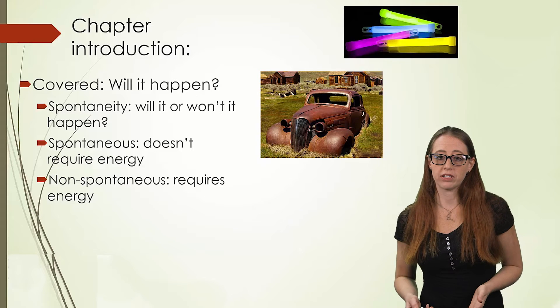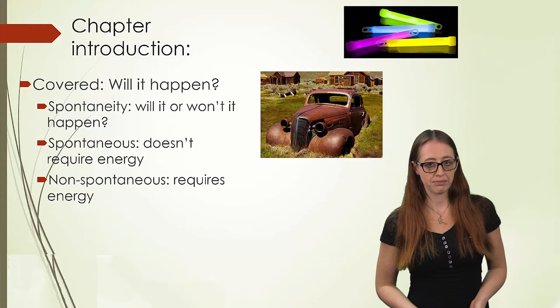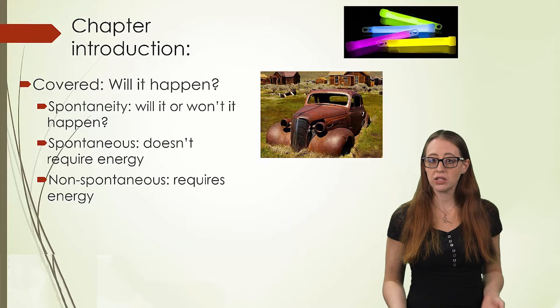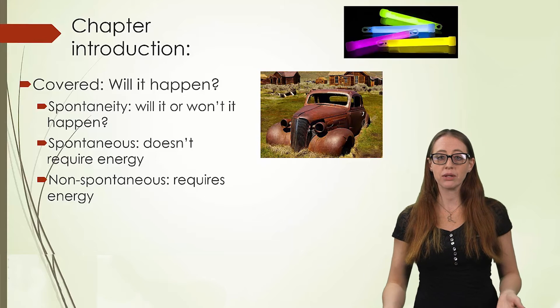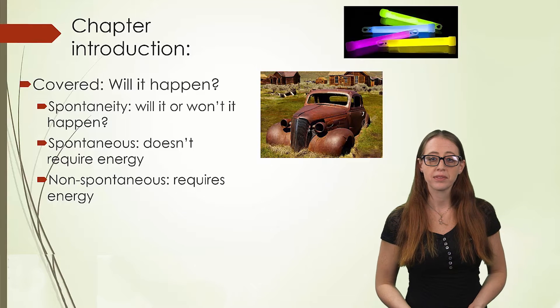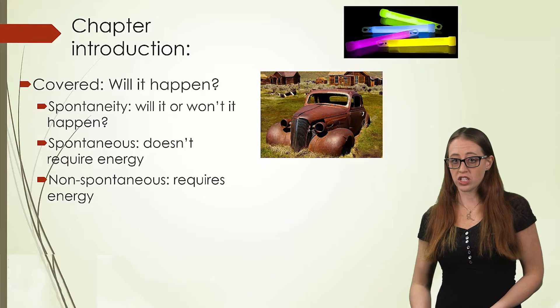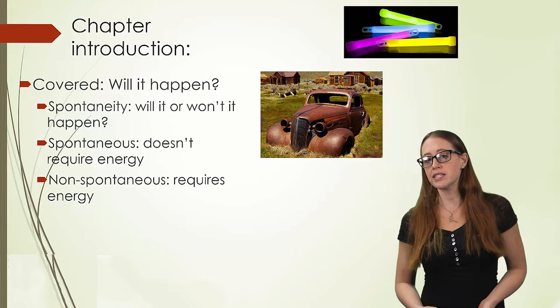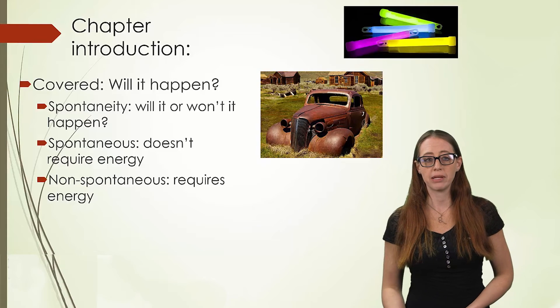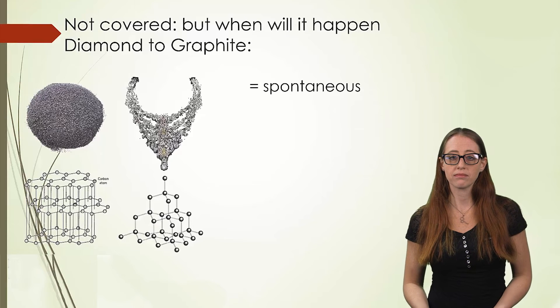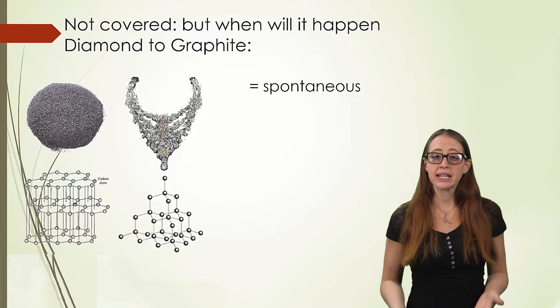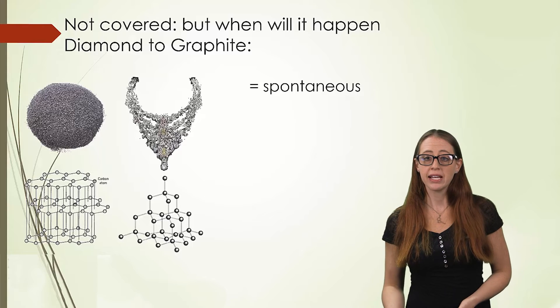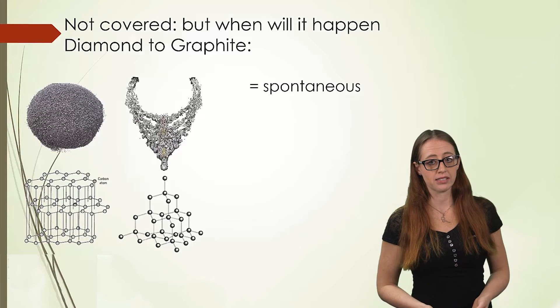One thing that we won't cover is how fast it will happen. So in this example, or this comparison, we know that a glow stick happens very, very quickly. We can watch it happen before our eyes. We can watch the reaction start to glow and then fade as it runs out of its reactants. Meanwhile, rusting takes years or longer to happen.